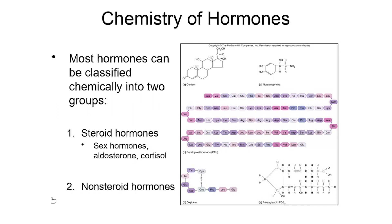Almost all of the hormones in the body fall into one of two classifications chemically. First we have steroid hormones — these are the minority of hormones and include the sex hormones: estrogen and progesterone in females, testosterone in males, as well as aldosterone and cortisol. They are referred to as steroid hormones because they are fats based on their chemical structure. If you look at this diagram, up in the top corner is an artist's representation of the chemical structure of cortisol. All steroid hormones have this four-ring structure because they are all synthesized from cholesterol.